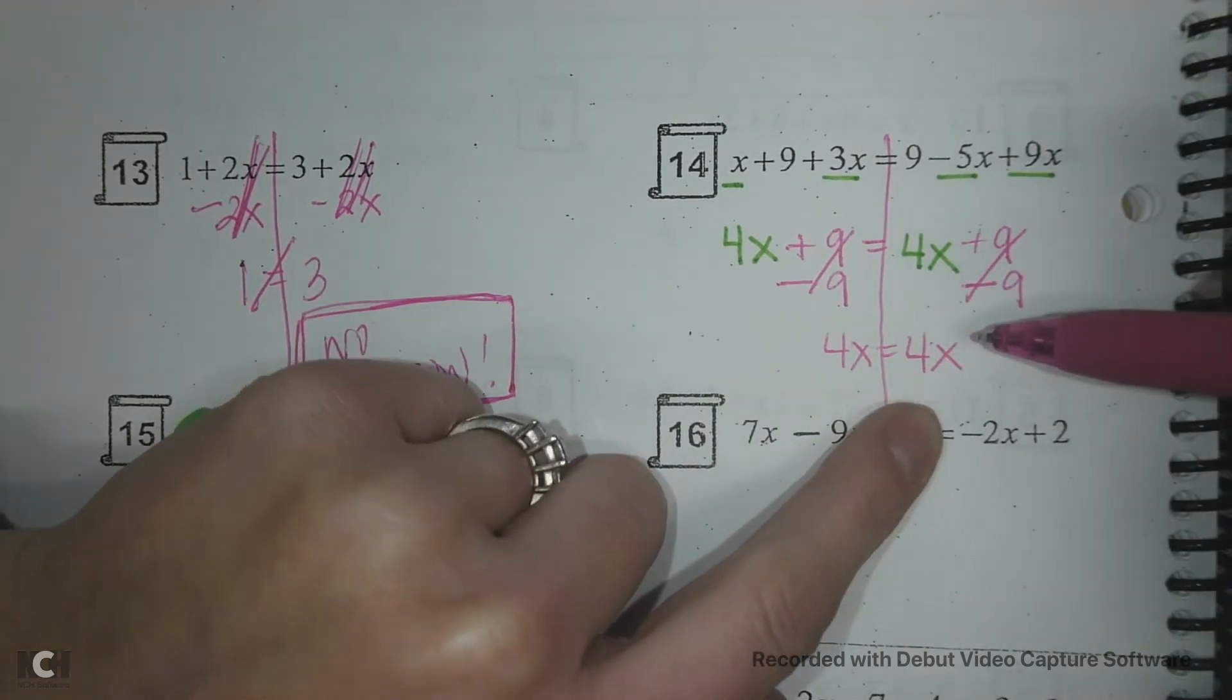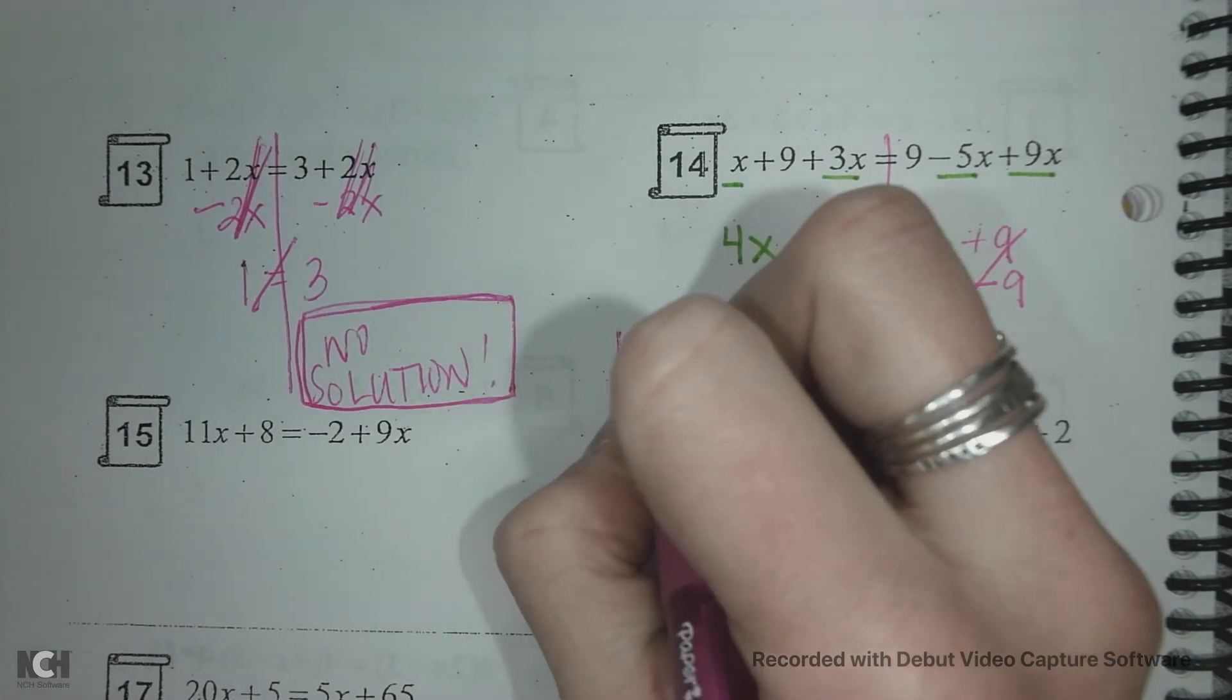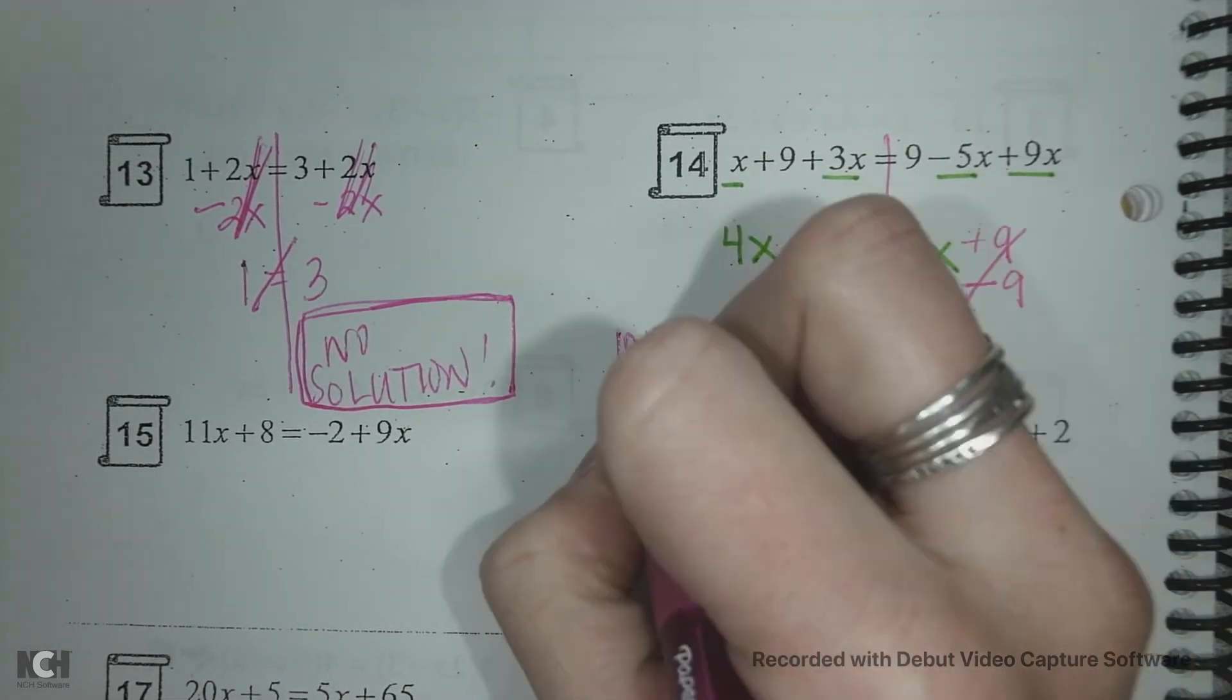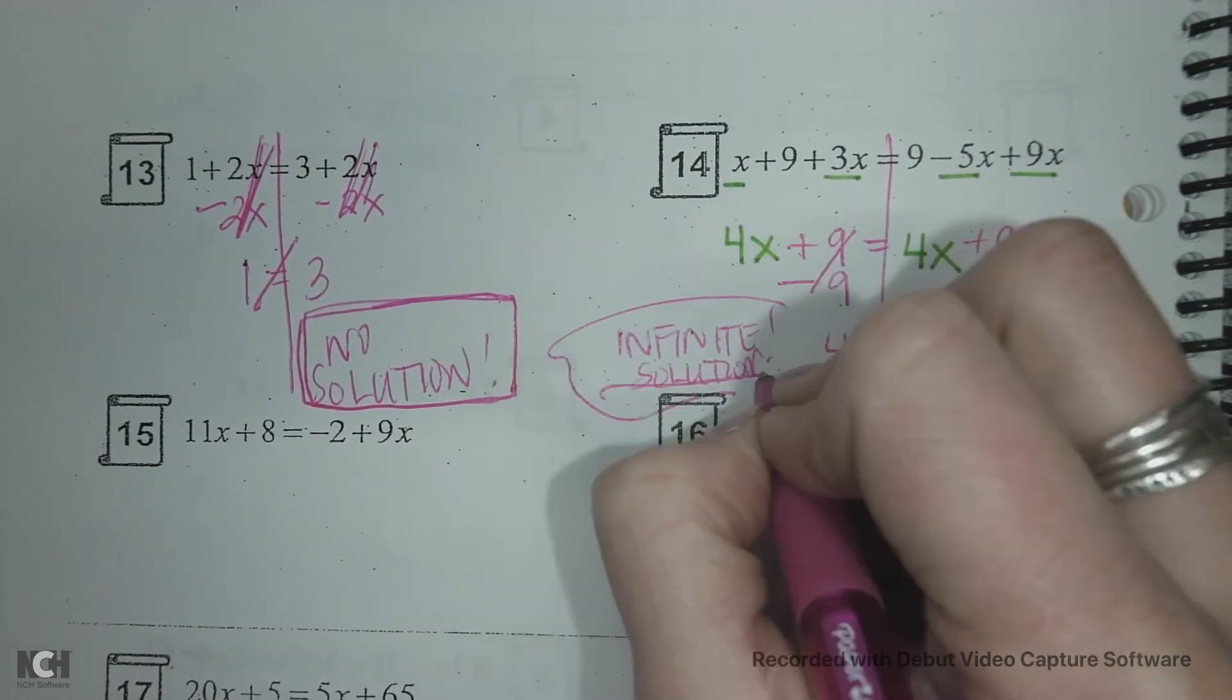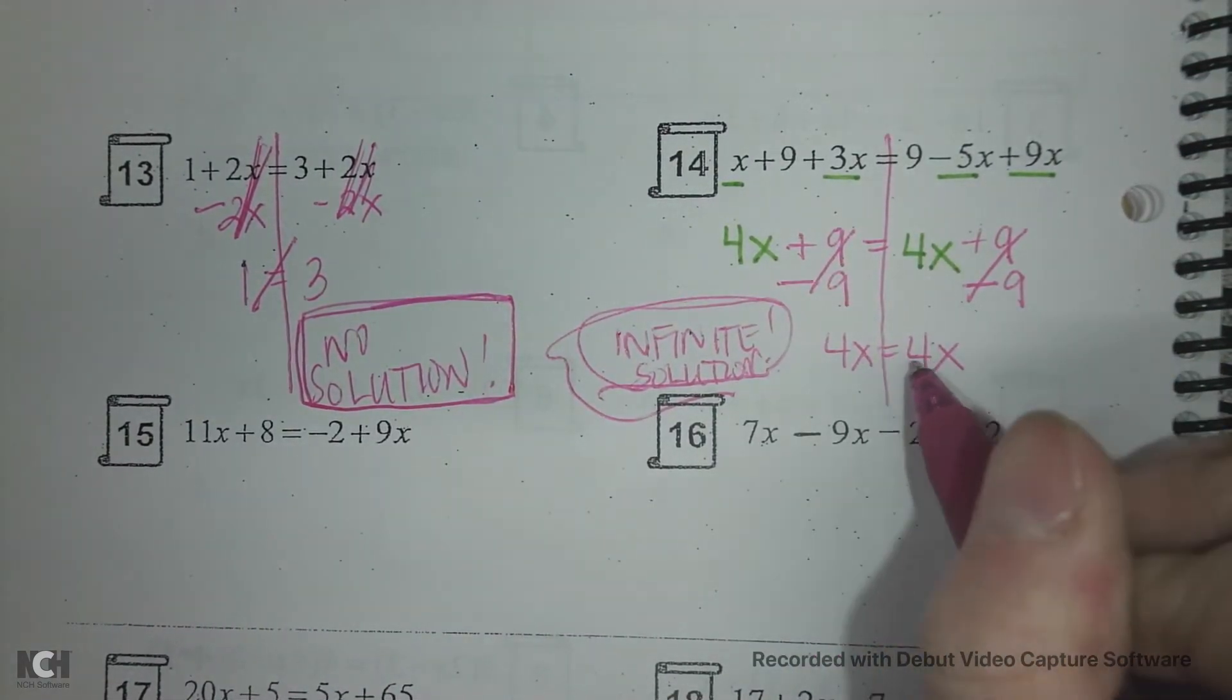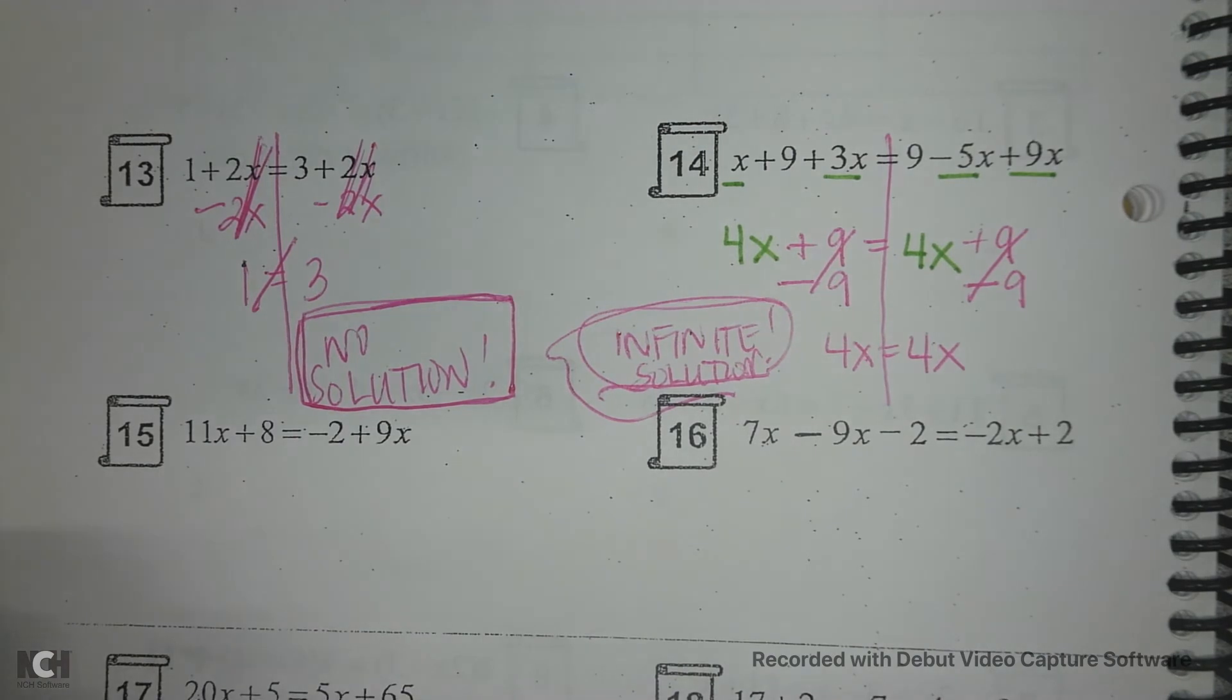So if they are equal, this is an infinite solution. A lot of students see that the number has an x and the number has an x and it freaks them out.